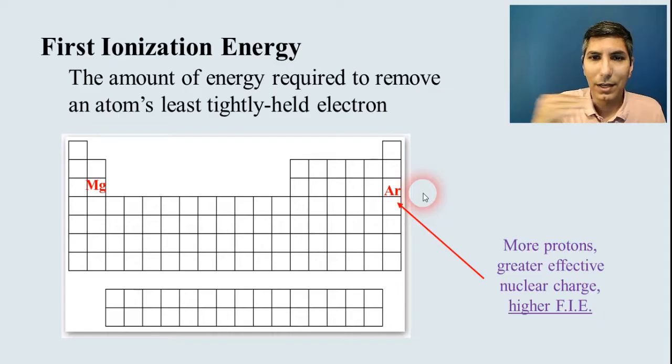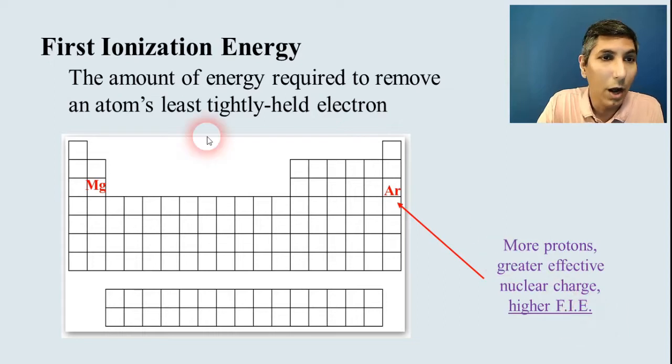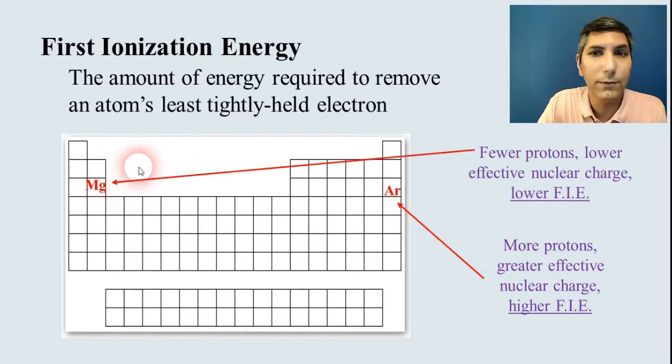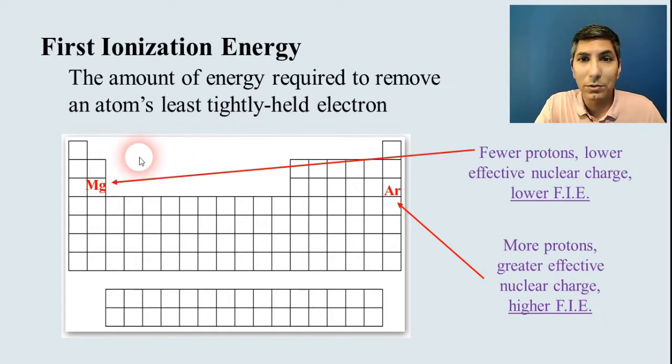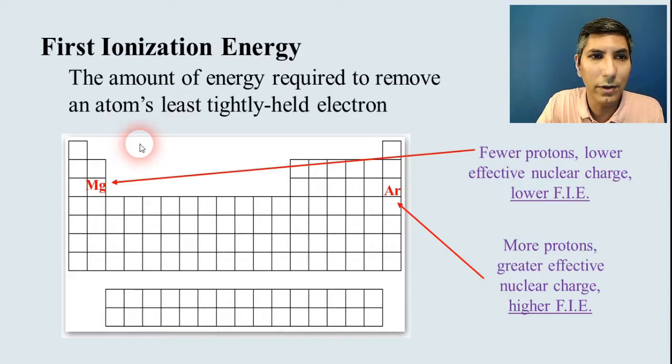If you're comparing right and left, talk about greater effective nuclear charge. So it's got the higher first ionization energy. On the other hand, magnesium has fewer protons. As a result, a lower effective nuclear charge and a lower first ionization energy.